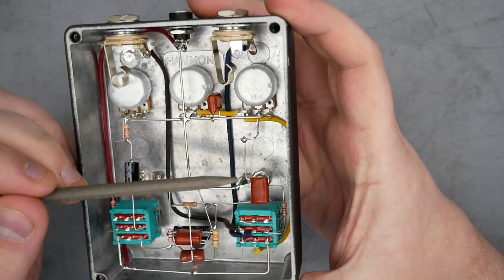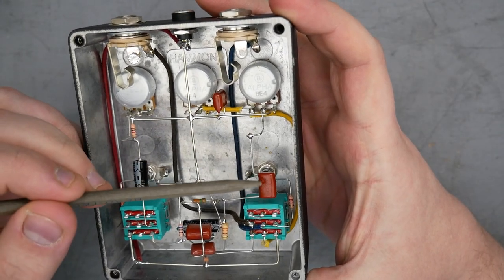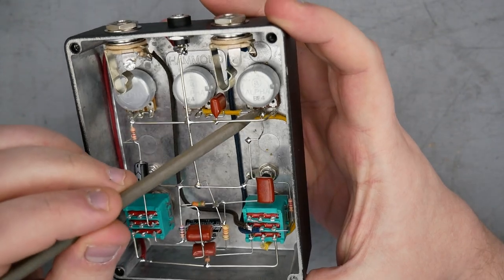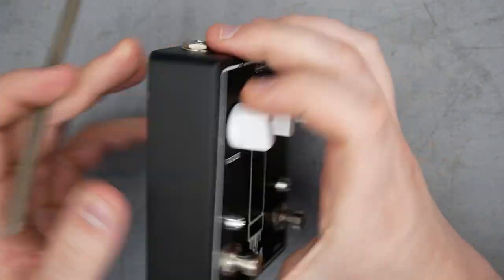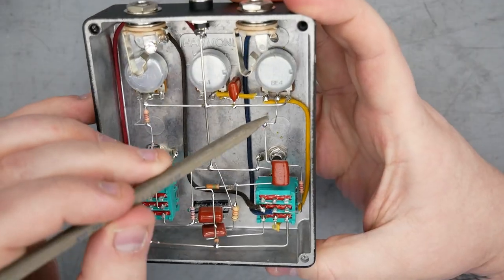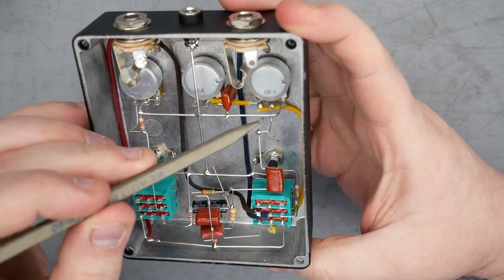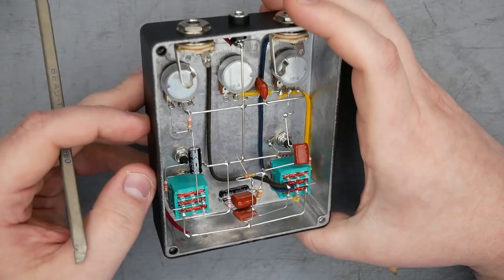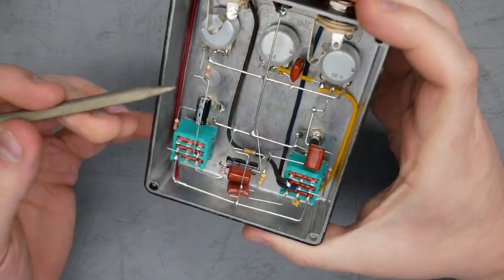Like you'll notice for this component here, the lead coming off of this film cap was not long enough to reach to the wiper for the volume pot here. So Rift had to add a little jumper wire to make sure it reached over there. So that's one example of somewhere that had to be considered.